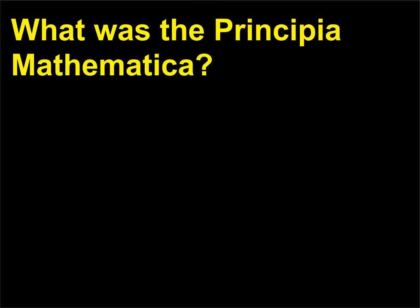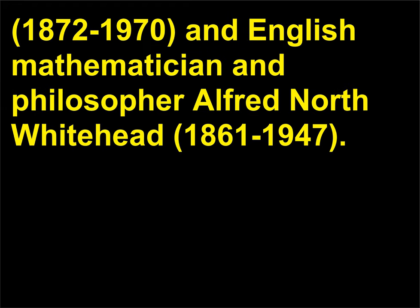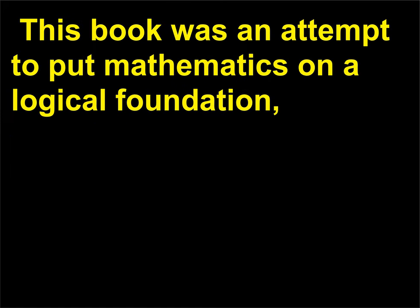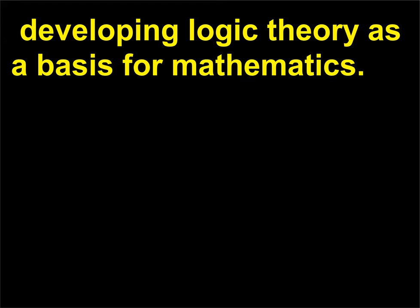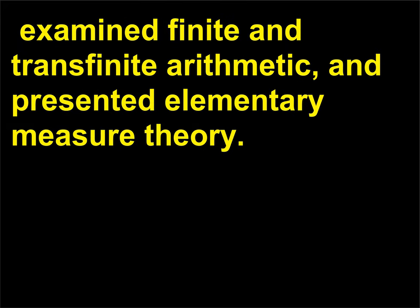What was the Principia Mathematica? In 1910 the first volume of the Principia Mathematica was published by Welsh mathematician and logician Bertrand Arthur William Russell (1872–1970) and English mathematician and philosopher Alfred North Whitehead (1861–1947). This book was an attempt to put mathematics on a logical foundation. It gave detailed derivations of many major theorems in set theory, examined finite and transfinite arithmetic, and presented elementary measure theory.